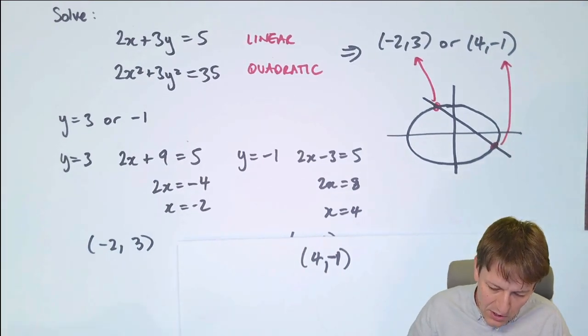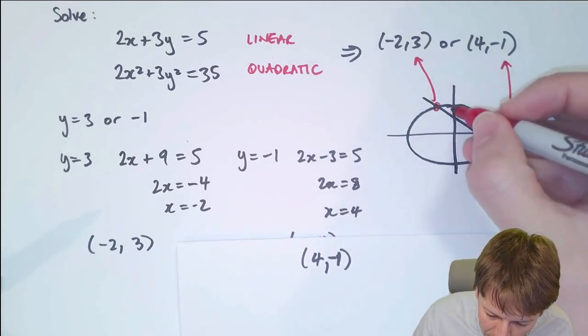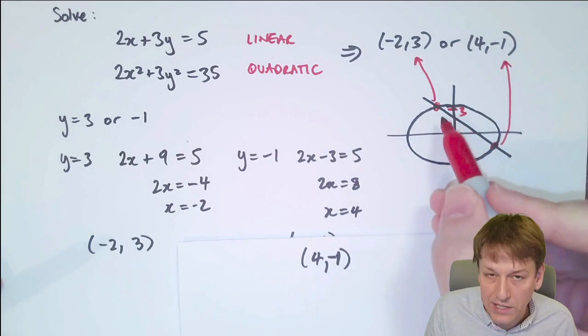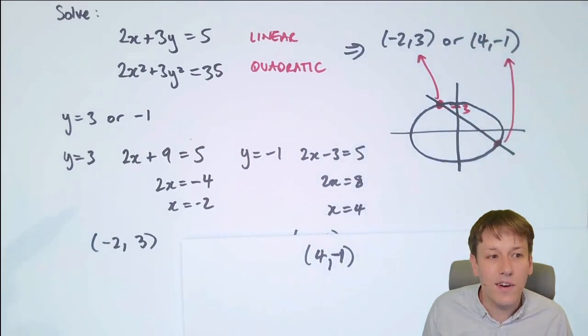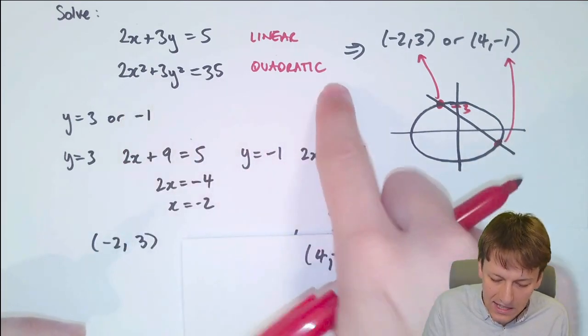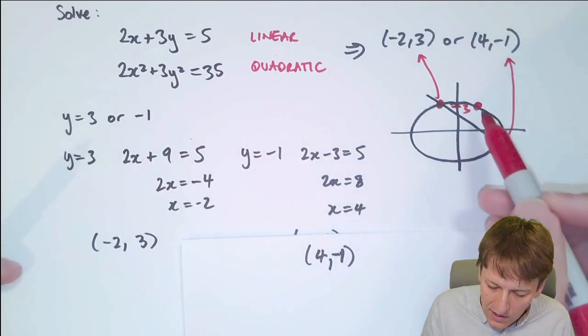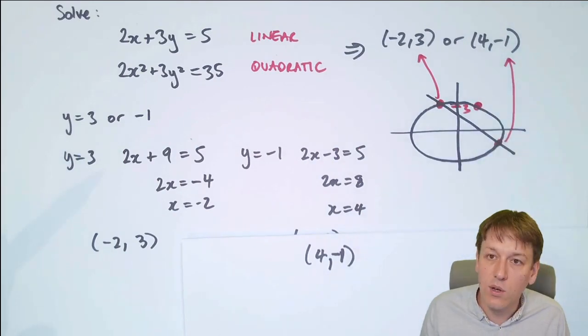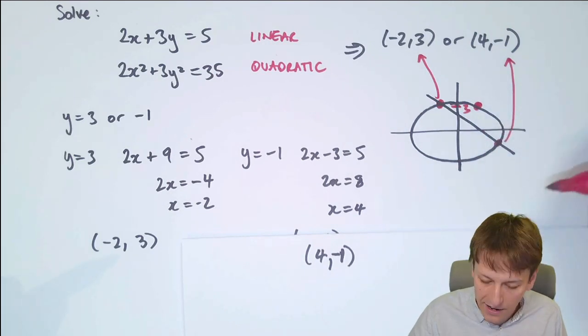We got those by substituting the y values into the linear equation. So I took the y value of 3 and said, what points on this line have y value 3? Well, it's just this one here. If I'd substituted back into the ellipse instead, there would have been two points. There'd been another point over here which would have had the same y value as this point. It would have been on the ellipse, but not on the straight line.